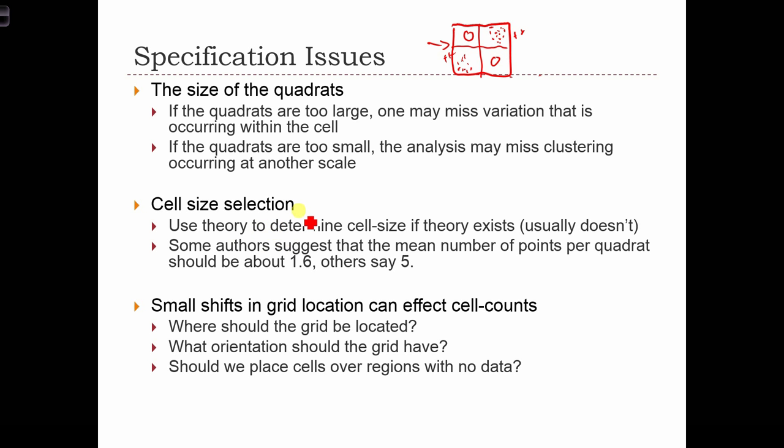In terms of cell size selection, if you have some sort of rational reason for specifying exactly how big one of these quadrats should be, then go ahead and use that. In my experience, there really isn't any rationale or some outside theory or some substantive knowledge about the process that's causing the point patterns that would guide us in selecting an appropriate quadrat size.